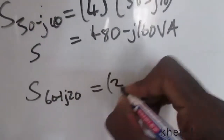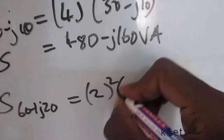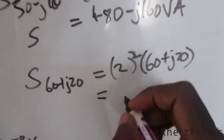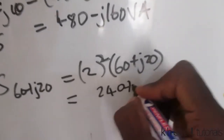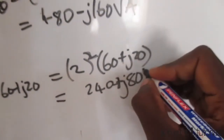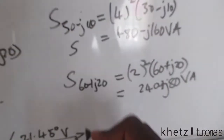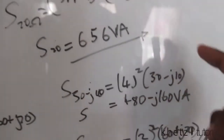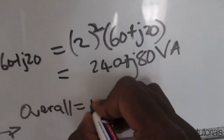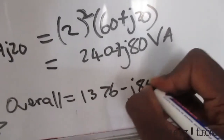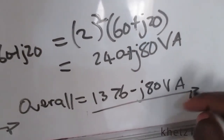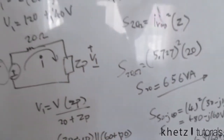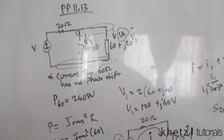For the last element, 60 plus j20, with 2 amperes flowing through it: 2 squared multiplied by (60 plus j20) gives 240 plus j80 volt-amperes. Finally, the overall complex power of the circuit is found by adding all three results: 3656 plus (480 minus j160) plus (240 plus j80), giving a total of 1376 minus j80 volt-amperes. If you haven't subscribed yet, please subscribe, and give the video a thumbs up. Leave a comment if anything isn't clear.